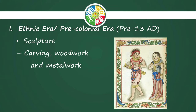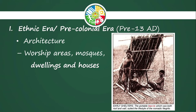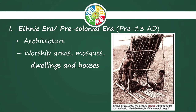For architecture, we have worship areas, mosques, dwellings, and houses. This is the earliest form of house — it consists only of a roof and wooden or bamboo supports serving as walls, just to keep the roof standing. Its purpose was simply to provide shelter from the sun or rain. Over time, their architecture evolved as they progressed into another art era.